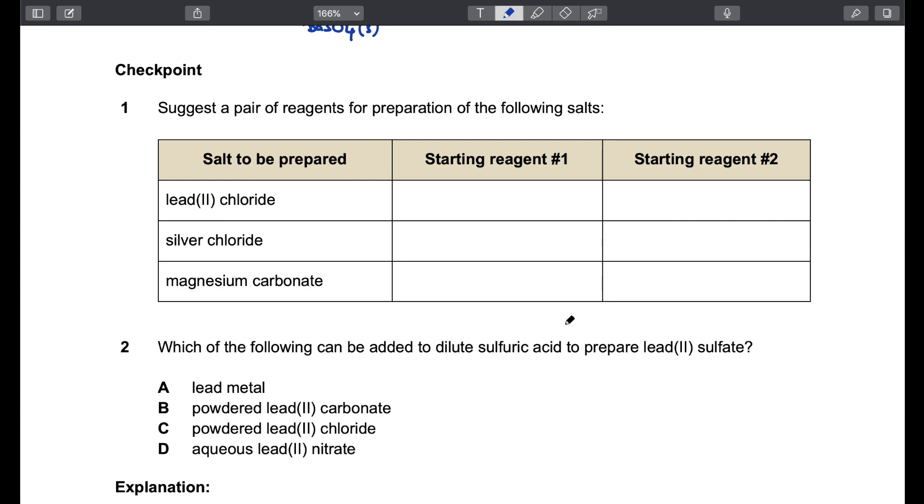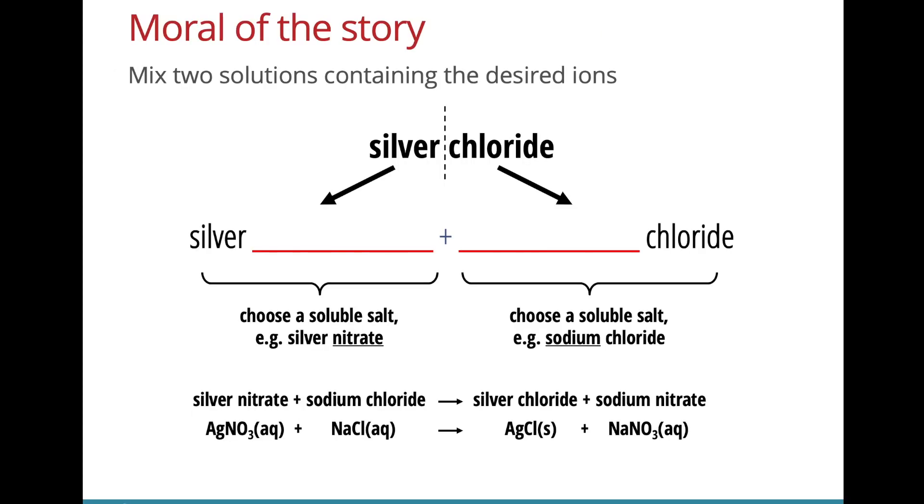Now let us practice. Pause the video, give it a try, and we'll go over the answers. When it comes to precipitation, a very simple rule to remember is that, let's say I want to prepare a salt like silver chloride, I'm going to split it into two. One solution must contain the silver ions, so we must use silver something. And the second solution that we use must contain chloride ions, so we use something chloride. Both solutions must be soluble, so bear in mind your solubility rules.